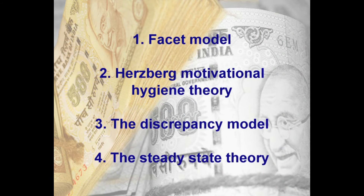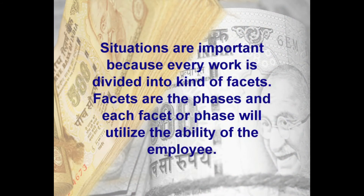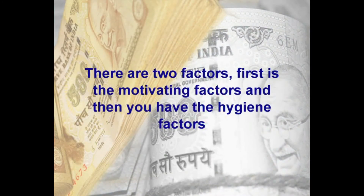The four theories of job satisfaction are: the facet model, Herzberg's motivational hygiene theory, the discrepancy model, and the steady state theory. The facet model focuses on situations — every work is divided into facets or phases, and each facet utilizes the employee's ability. The amount of ability used in each phase gives the level of satisfaction. If you are wholehearted in your work you are more satisfied; if you are highly qualified but your work doesn't use your abilities, you may be dissatisfied.